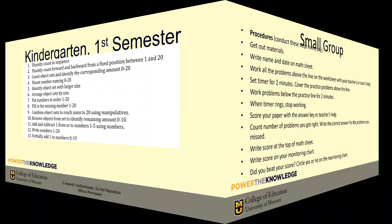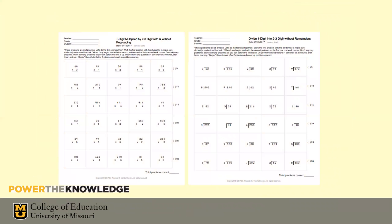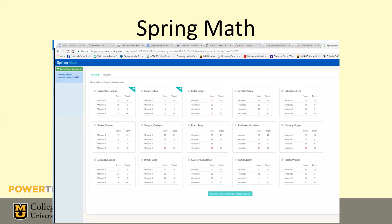These probes are taken from Spring Math, which I'll plug briefly. It's an approach developed by Amanda VanDerHeyden and is designed to assess different areas in math and highlight what each kid needs. For example, looking at this chart, student Etta Schneider in the top right has a score of 14 on the fourth measure, indicating she is low in that particular skill.